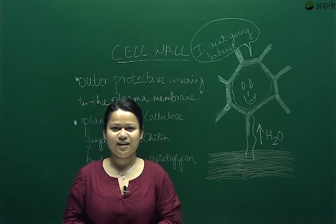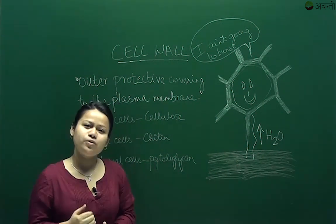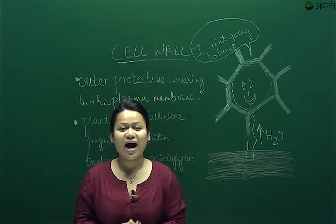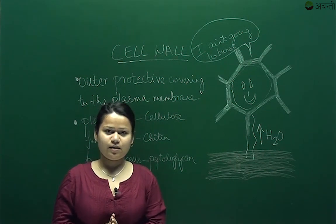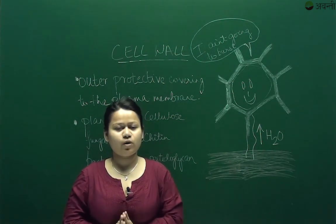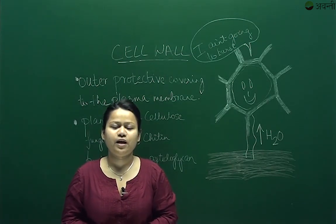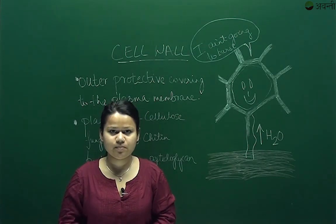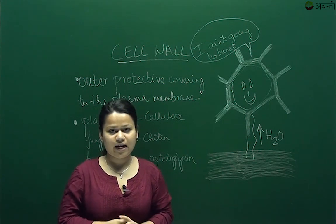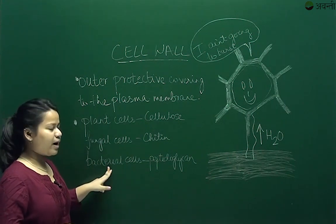Now let's come to another component of the cell — the cell wall. Plants get their water through an underground system, so they have to do a lot of heavy lifting work against the force of gravity. Ideally a plant cell should burst, but this does not happen because they have a rigid component called a cell wall. The cell wall forms the outer protective covering to the plasma membrane. Animal cells do not get their water this way, so the cell wall is not present in animal cells. Cell wall is present in plant cells, fungal cells, and bacterial cells.